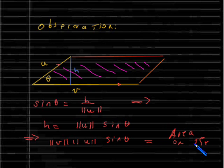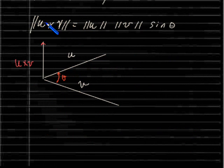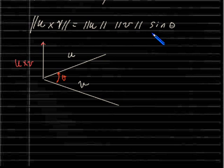So this equals the area of the parallelogram spanned by u and v. What we have here is that the norm of u cross v is equal to the area of the parallelogram spanned by u and v. That is why we wanted to actually prove this theorem. Thank you for listening.